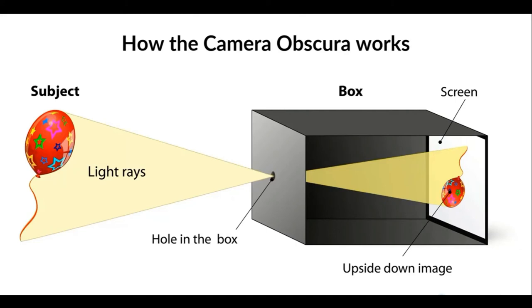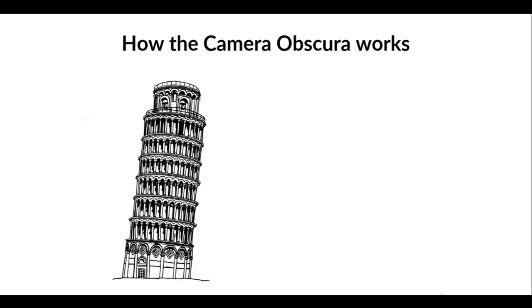But basically this is how the physics of light works. When it's passed through this small hole, it's actually projected on the other side upside down and back to front. Now camera obscuras were used throughout history, as I mentioned, for painting.